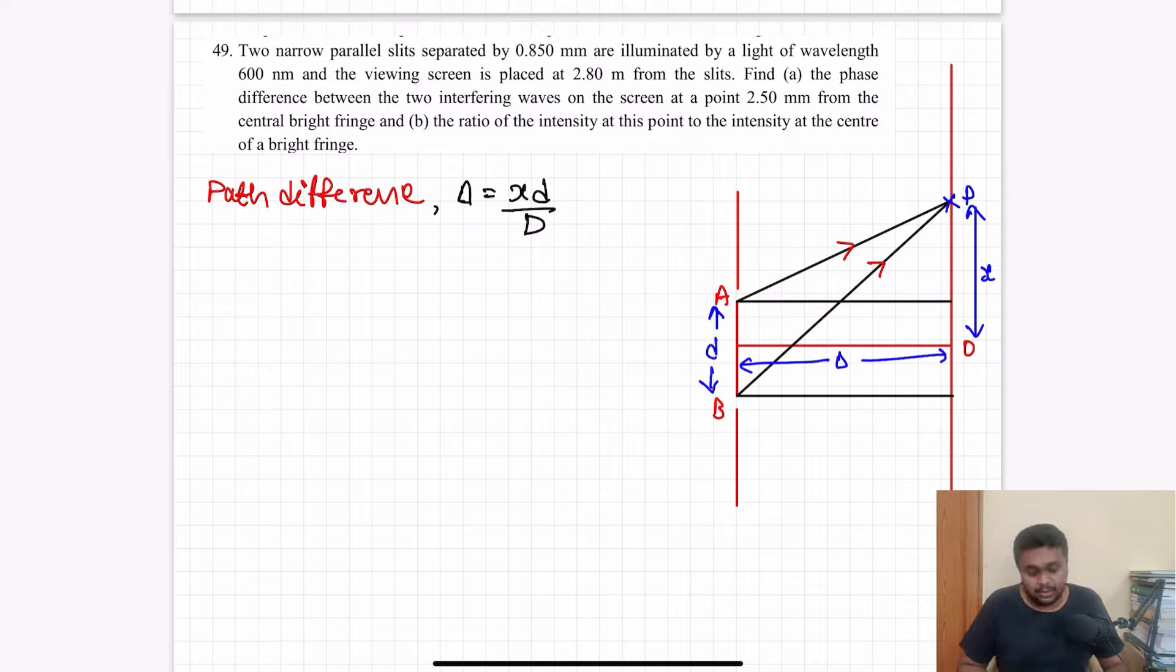Now the problem: two narrow parallel slits separated by 0.85 millimeter are illuminated by a light of wavelength 600 nanometer and viewing screen is placed at 2.8 meter from the slits. Find part A, the phase difference between the two interfering waves on the screen at a point 2.5 millimeter from the center bright fringe, the ratio of intensity at this point to the intensity at the center of the bright fringe.